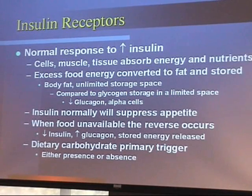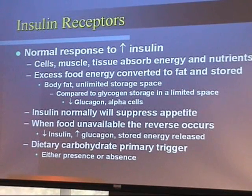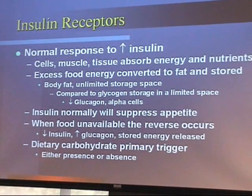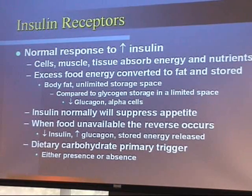Insulin will normally suppress appetite, and that makes sense — as we eat and fill ourselves up, insulin rises and the message is that we're full. When food is unavailable, the reversal happens: insulin drops, glucagon rises, and the message is that there's less food available, so we're going to rely on our energy stores. Again, it is dietary carbohydrates that are the primary trigger — either their presence or their absence.